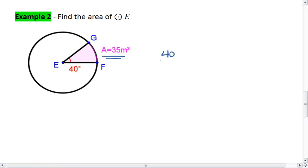I have a 40 to 360 ratio, which is my sector area to my entire area of the circle. Cross multiply, I get 40 times the area of the circle equals 360 times 35, which is 12,600.